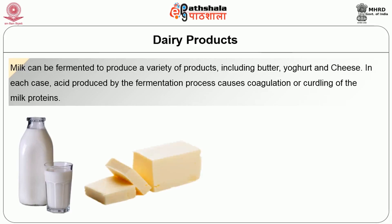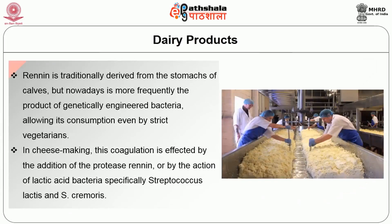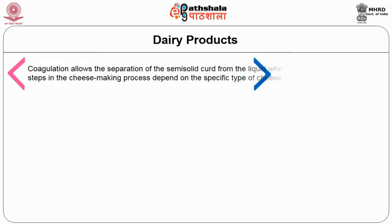Next we will discuss about dairy products. Milk can be fermented to produce a variety of products including butter, yogurt and cheese. In each case, acid produced by the fermentation process causes coagulation or curdling of the milk proteins. Rennet is traditionally derived from the stomachs of calves but nowadays is more frequently the product of genetically engineered bacteria. In cheese making, this coagulation is effected by the addition of the protease rennet or by the action of lactic acid bacteria — specifically Streptococcus lactis and Streptococcus cremoris.